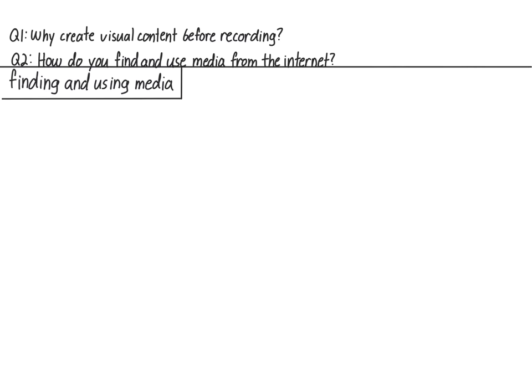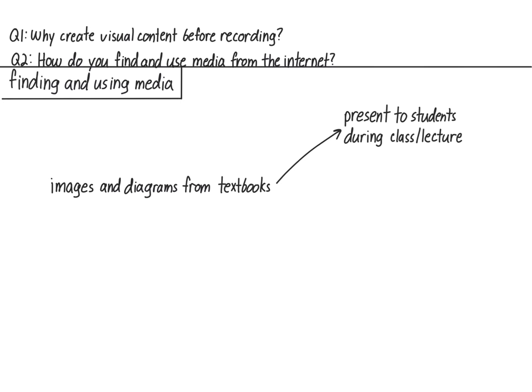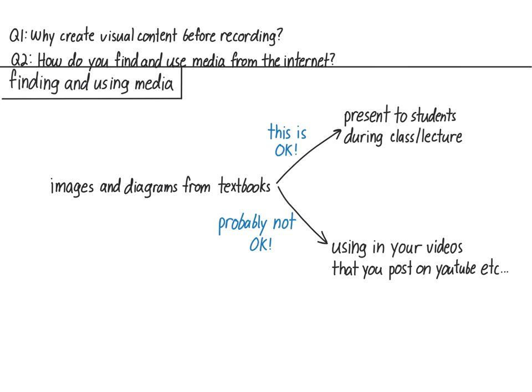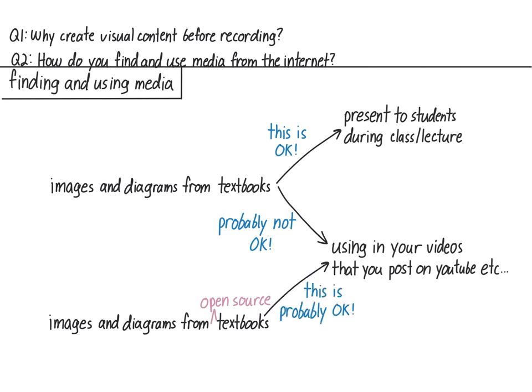A few caveats before I show you how to find media online. First, if you're just using images and diagrams from your class textbook and only using them to teach the students in your class, there's no need to worry about licensing — you can just use them. But if you want to post your videos on YouTube or anywhere else online, using media from your textbook is probably a bad idea, since most textbook media is under very restrictive licenses and using it in a public video without permission could be a copyright violation. However, there are open source textbooks that only use open source media, so anything in those is probably okay — but check the licenses on each piece of media you use.